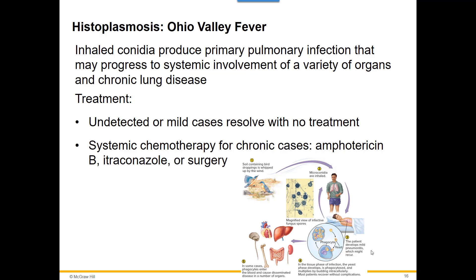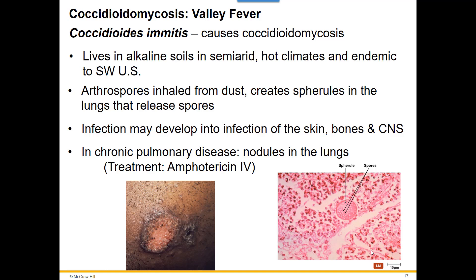Another true pathogen is Coccidioides immitis, which causes coccidioidomycosis. This fungus likes to live in more alkaline, higher-pH soil and prefers a drier, hotter climate. In the United States we find it more in the southwestern states — Arizona and Southern California. It is picked up through inhalation. This particular fungus creates large spherules in the lung tissue — almost like huge growths where the fungus is reproducing and forming lots of spores.